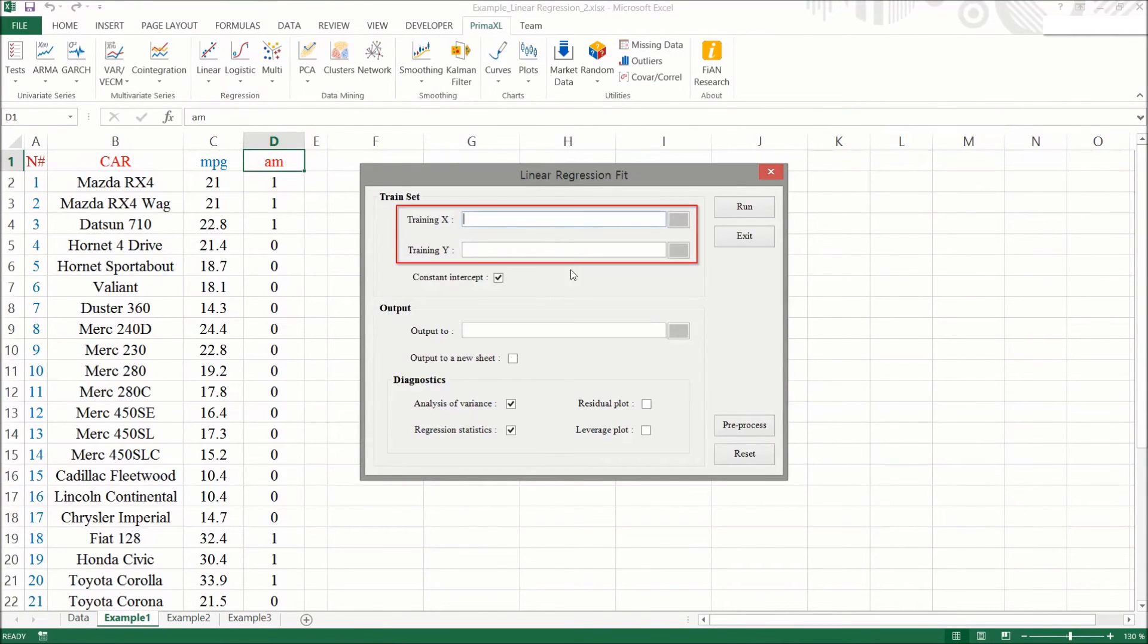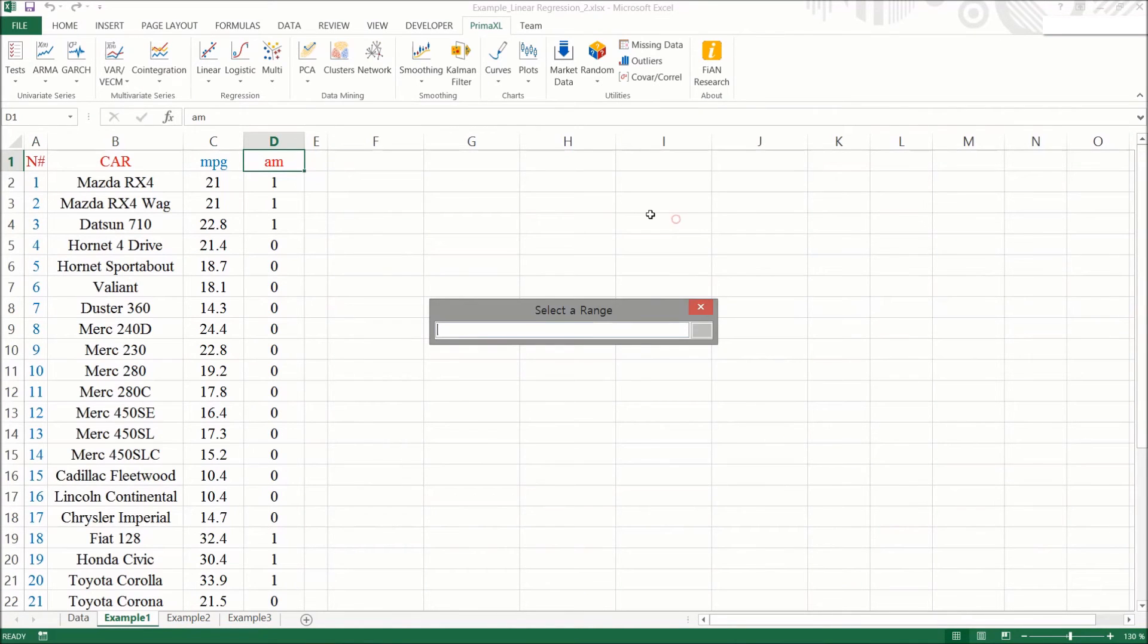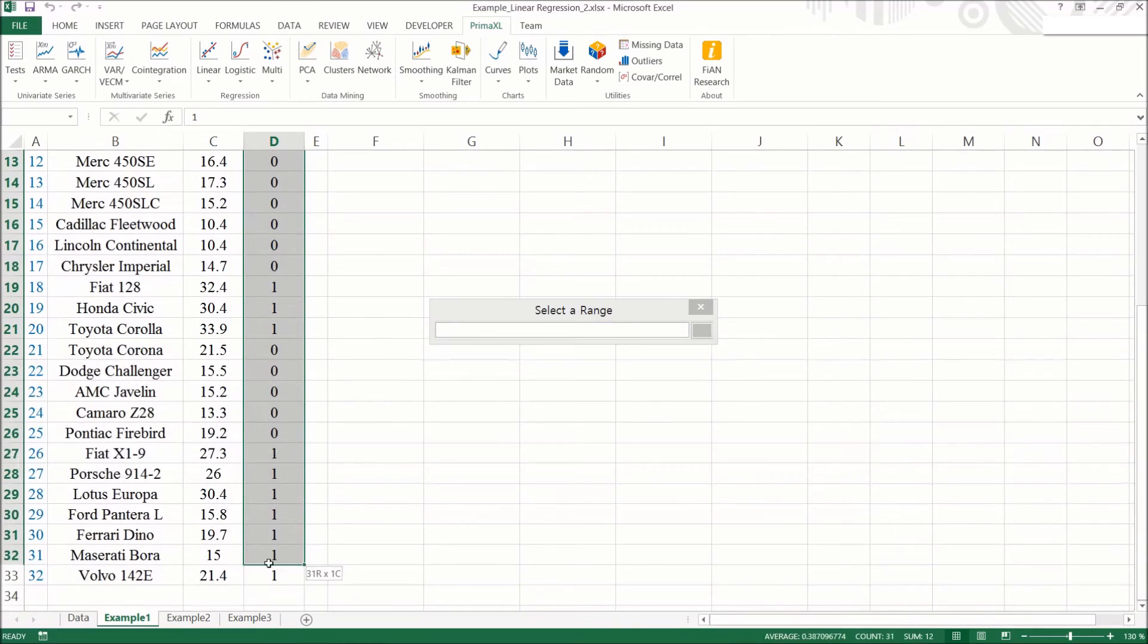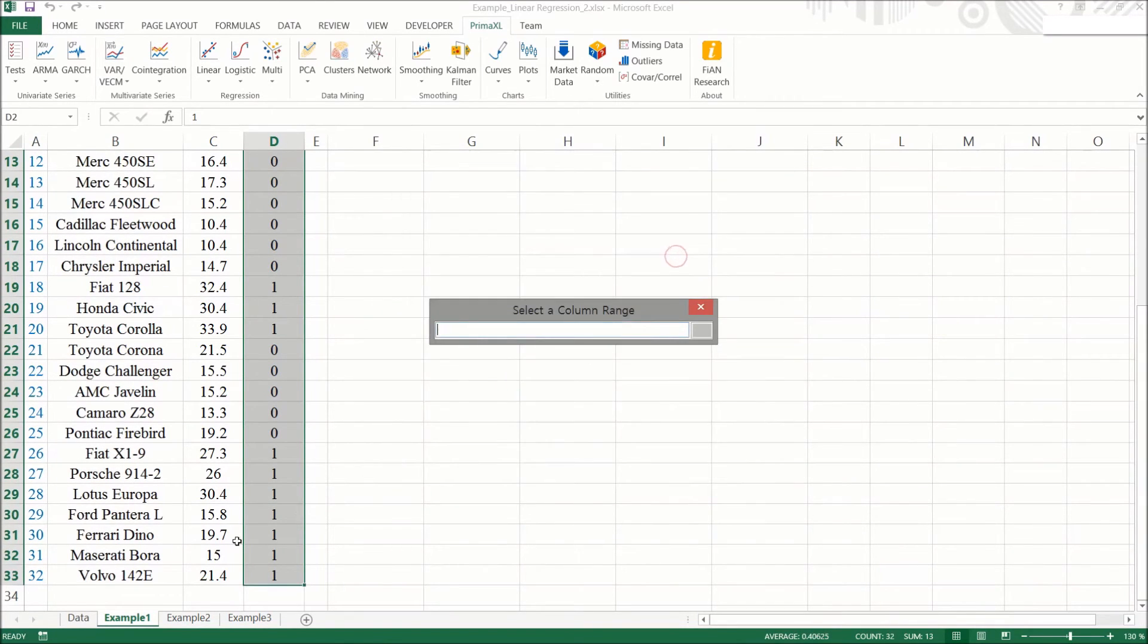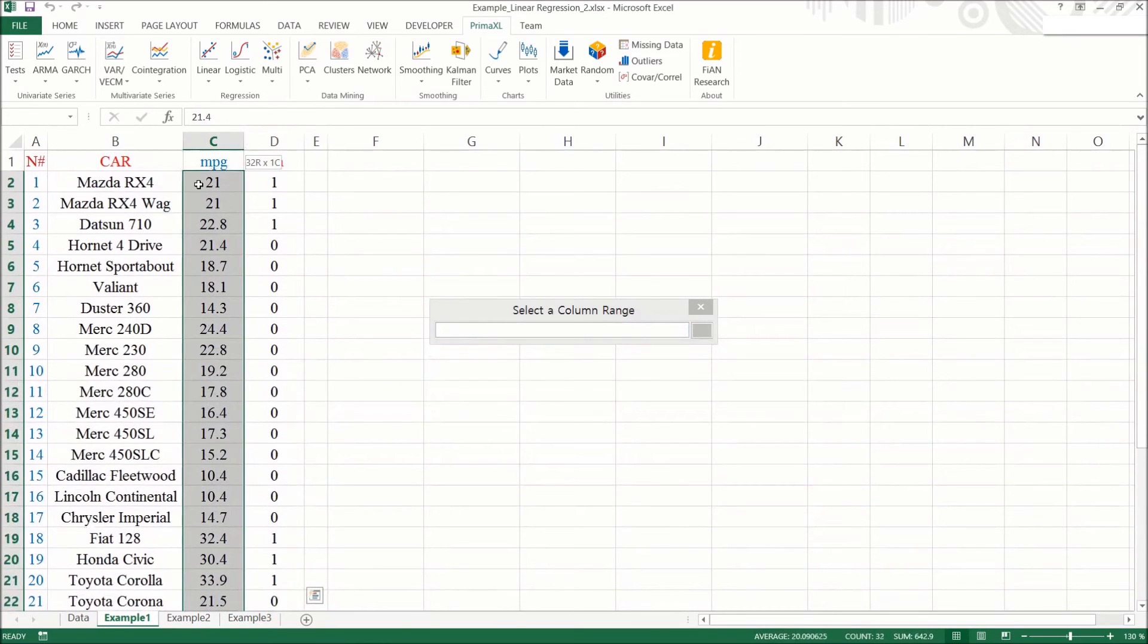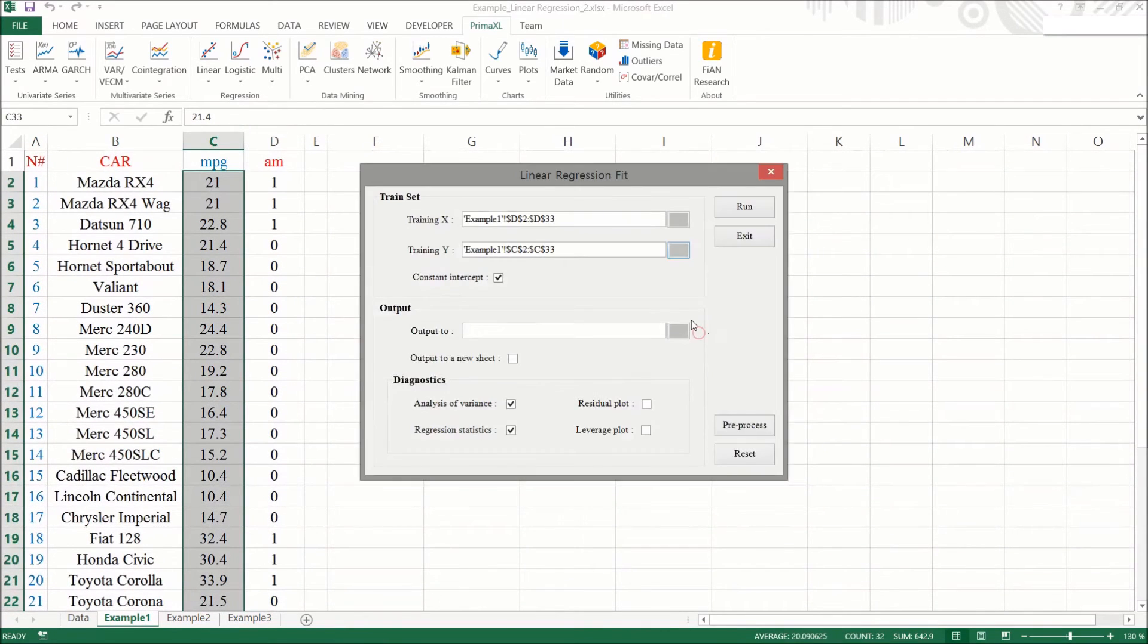We fill out the blanks with the cell ranges for X and Y. We also specify the output location.